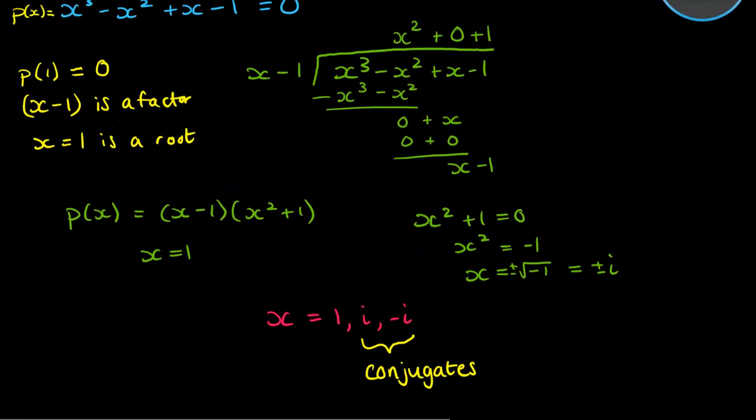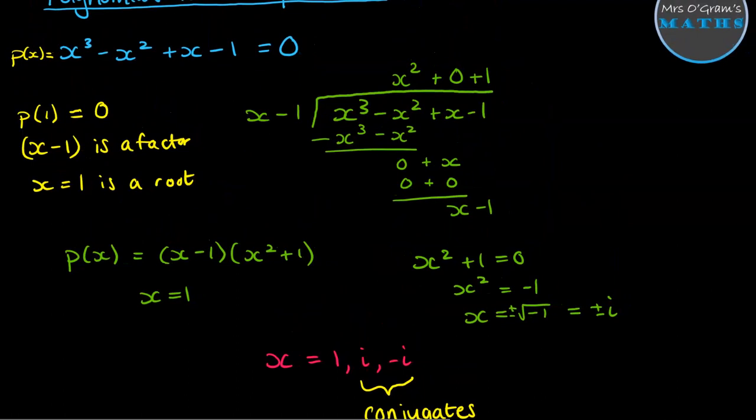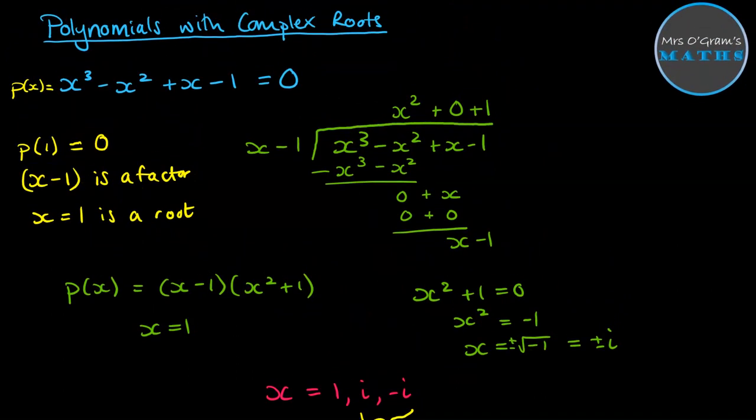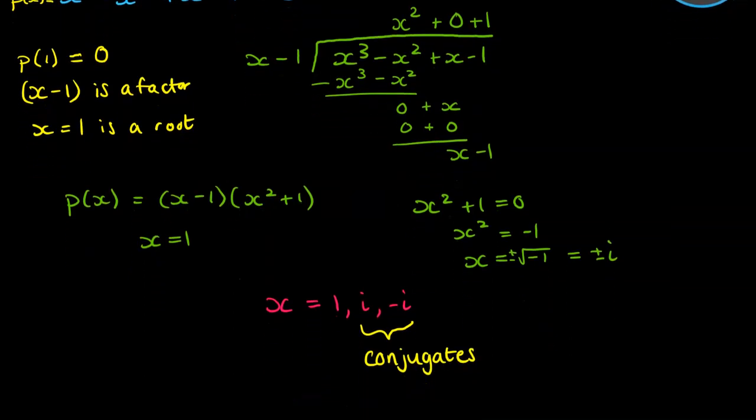So that is true when you're solving a polynomial that has real coefficients. So you'll see this polynomial at the top here. As long as all of those coefficients are real numbers, your complex roots will always come in conjugate pairs. And that's the conjugate root theorem.